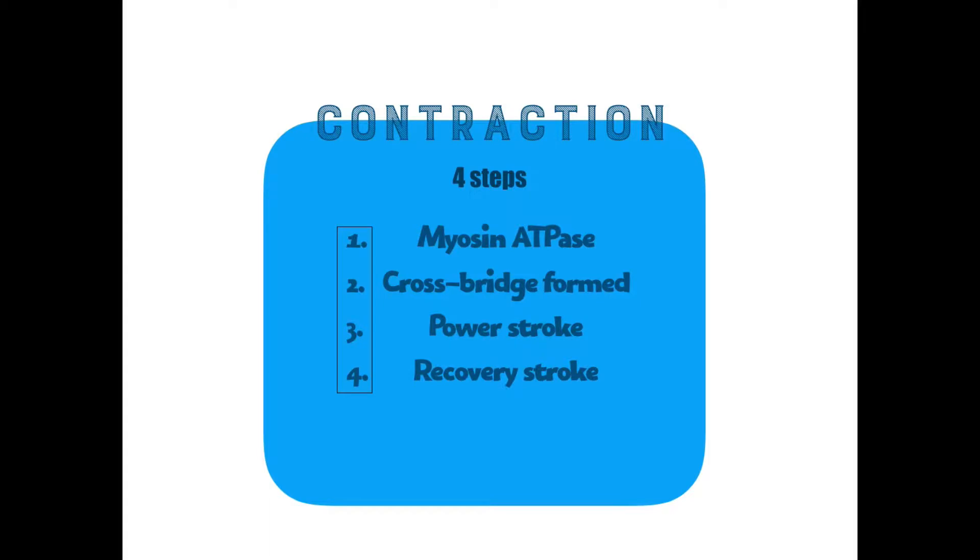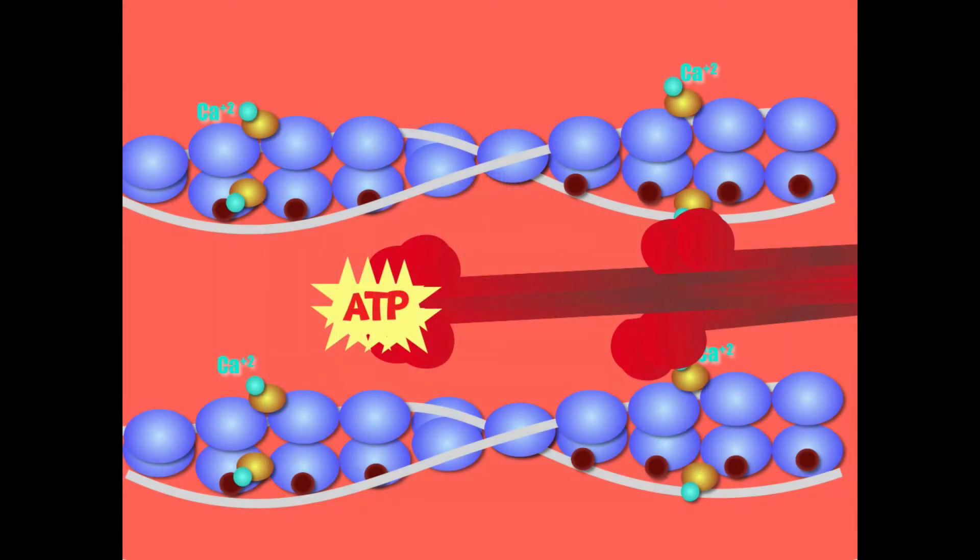We're going to break it down into four steps. First is the myosin ATPase, the cross bridge formation, the power stroke, and then the recovery stroke. All of these require ATP.